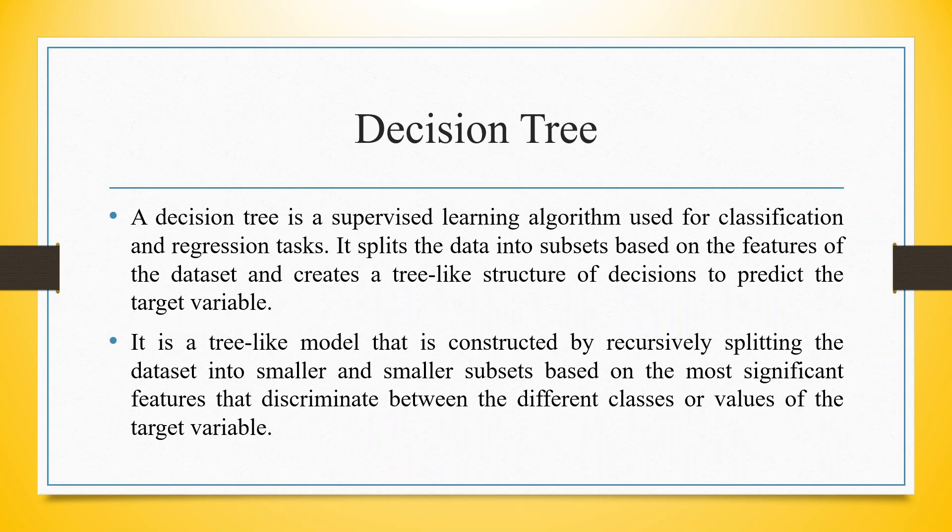Decision Tree is a supervised learning algorithm used for classification and regression tasks. It splits the data into subsets based on the features of the dataset and creates a tree-like structure of decisions to predict the target variable. It is constructed by recursively splitting the dataset into smaller subsets based on the most significant features that discriminate between the different classes or values of the target variable.